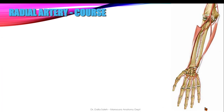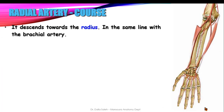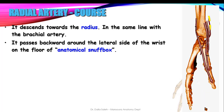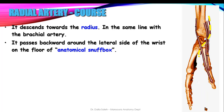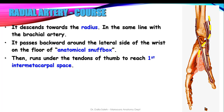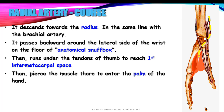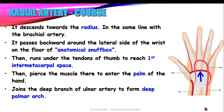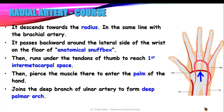The radial artery descends towards the radius in line with the brachial artery, then passes backwards around the lateral side of the wrist on the floor of the anatomical snuff box. It runs under the long tendons of the thumb to reach the first intermetacarpal space, then pierces the dorsal interosseous muscle to enter the palm, where it joins the deep branch of the ulnar artery to form the deep palmar arch.